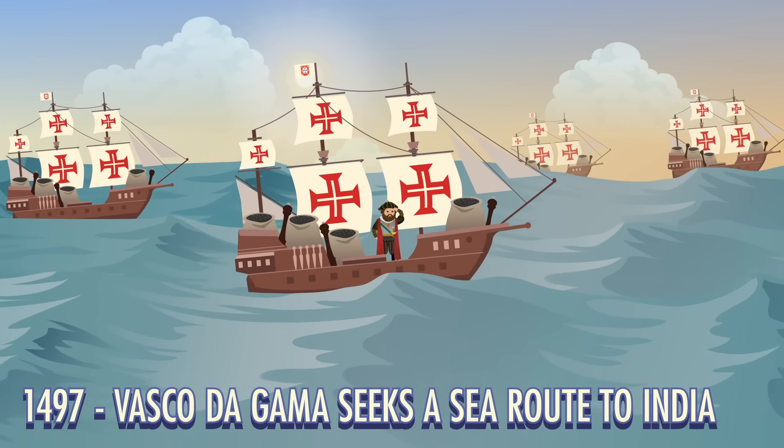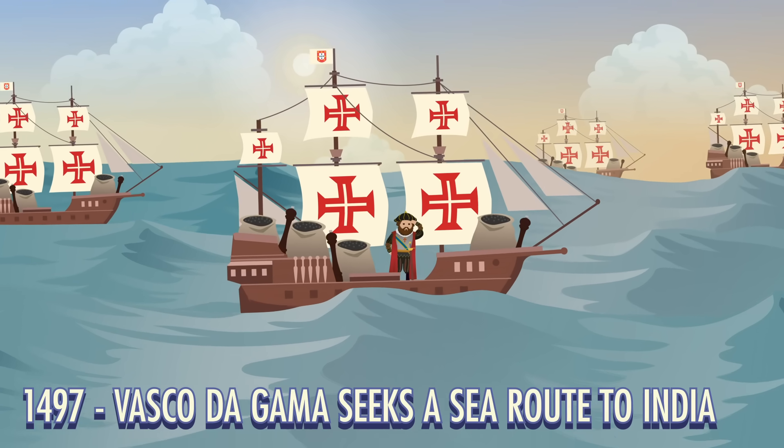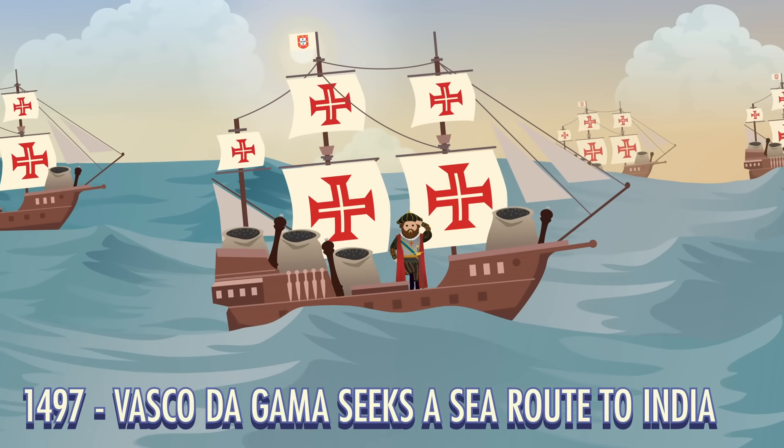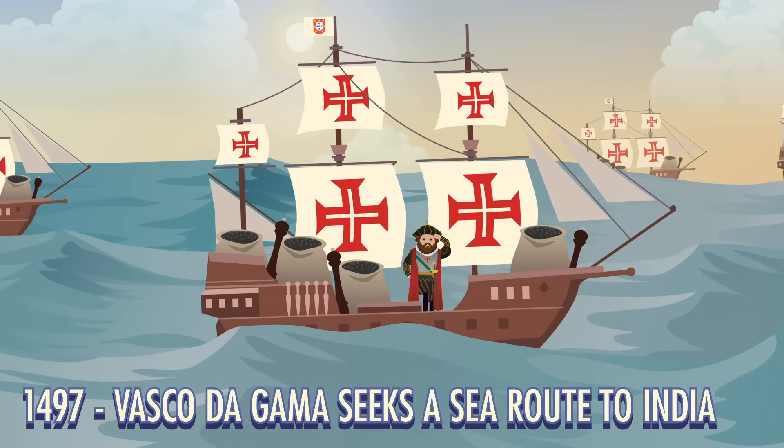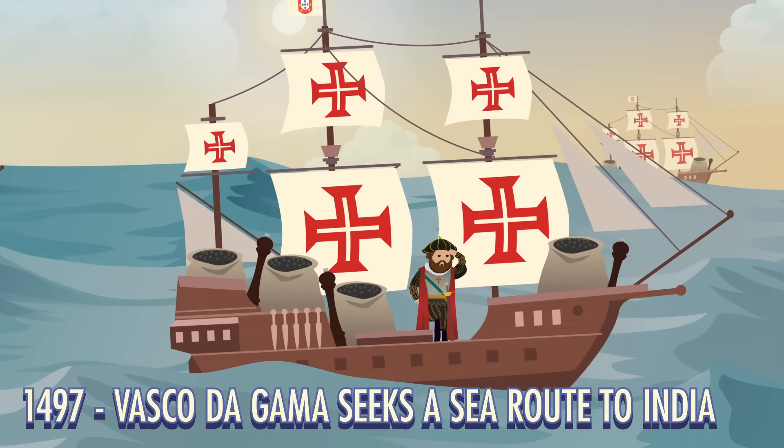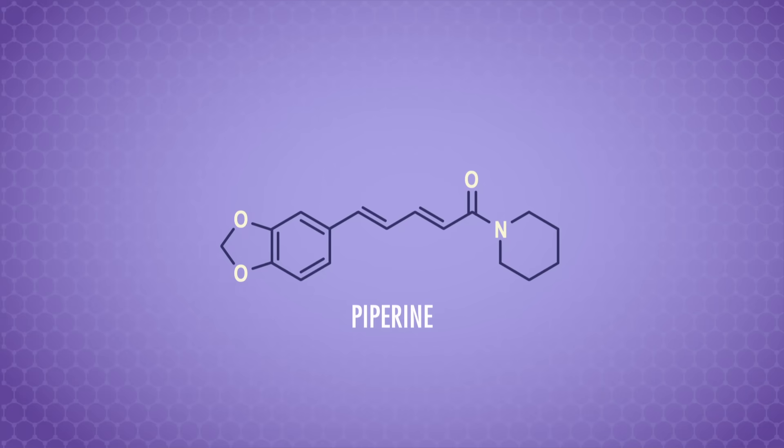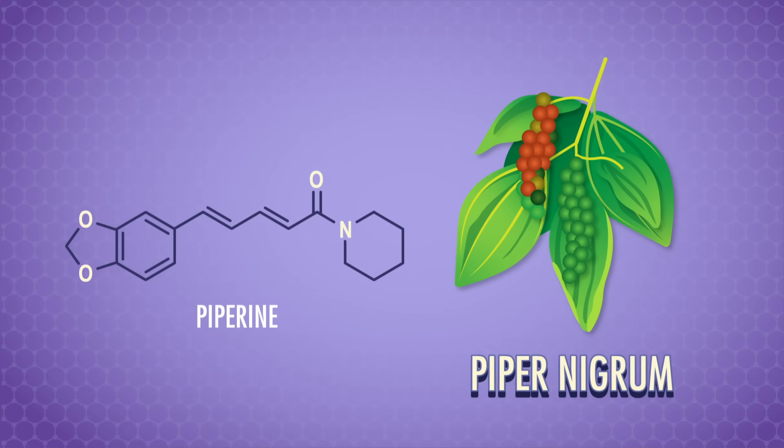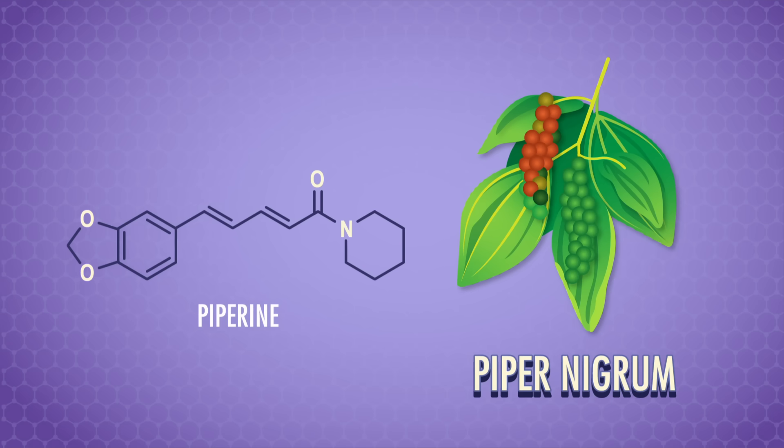The Portuguese explorer Vasco da Gama sought a sea route to India in 1497 to bring black pepper and other spices back to Europe, which helped kick off the Age of Discovery. So in some way, the pursuit of black pepper and the organic chemical piperine changed the world.